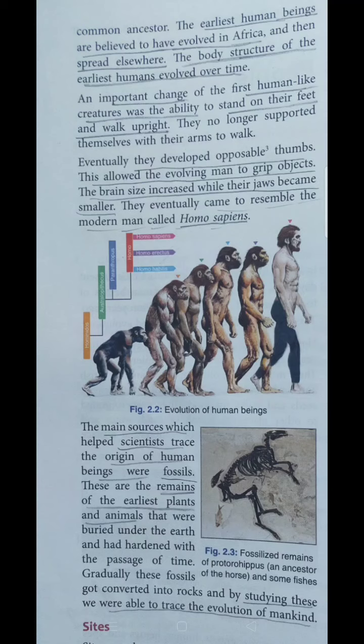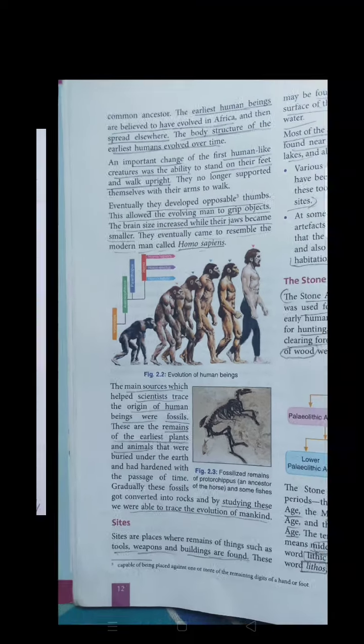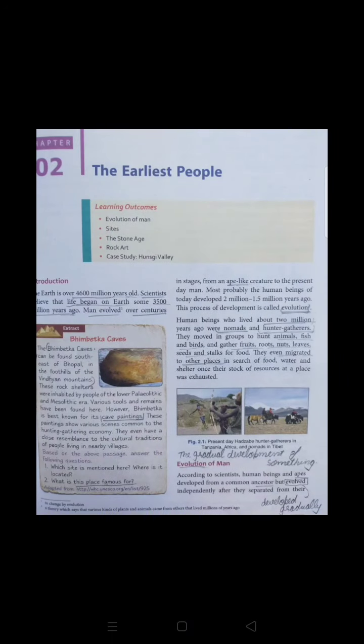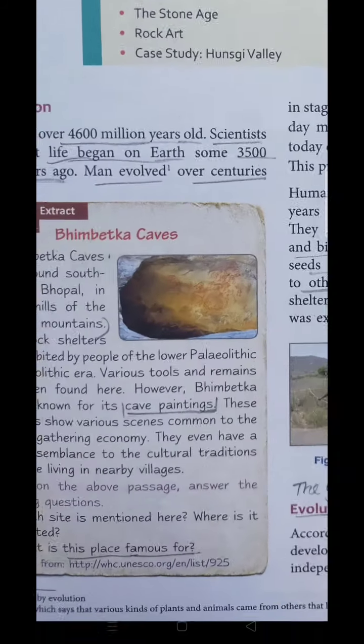So what does actually evolution mean? The process of development by which human beings and various plants and animals evolved over a period of time — how they all started growing up — that is representing evolution.